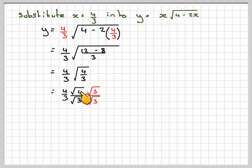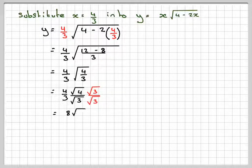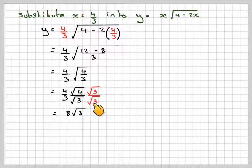This is going to be 4 times 2, because the square root of 4 is 2. So it's going to be 4 times 2, which is 8 root 3. And root 3 times root 3 is 3, and 3 times 3 is 9.